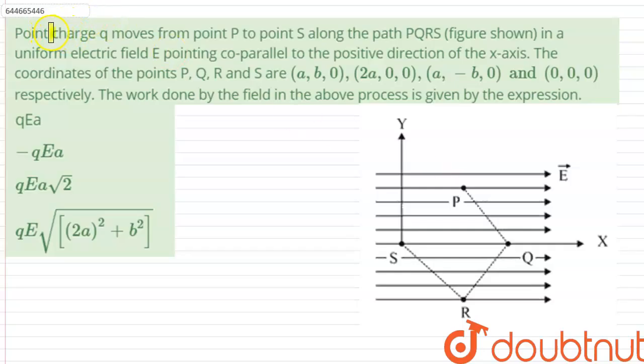Hello everyone. A point charge Q moves from point P to point S along the path PQRS as shown in the figure, in a uniform electric field E pointing co-parallel to the positive direction of the x-axis.